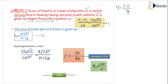What is the meaning of this note? The head loss in a pipe of diameter D in which viscous fluid is flowing having viscosity mu — that means the loss of head due to the presence of viscosity. Viscosity is also known as liquid friction — point to be noted.